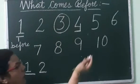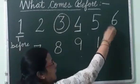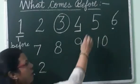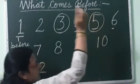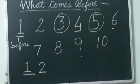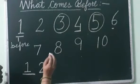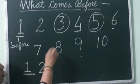Now look again. What comes before 6? 5. So this is the before number. This is the before number, means the number which comes before that number.